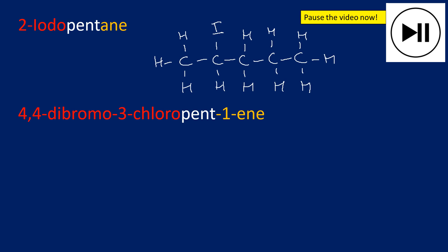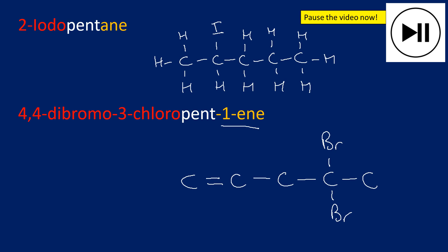The second molecule has two functional groups — an 'ene' and a haloalkane component, making it a more difficult example. Start with pent-1-ene: a five-carbon chain with a double bond between C1 and C2. Then 4,4-dibromo: on the fourth carbon there are two bromines. There's also a 3-chloro substituent on the third carbon. Tidy up by adding hydrogens, being careful that carbons either side of the double bond only have two additional bonds since the double bond itself counts as two. That gives us 4,4-dibromo-3-chloropent-1-ene.